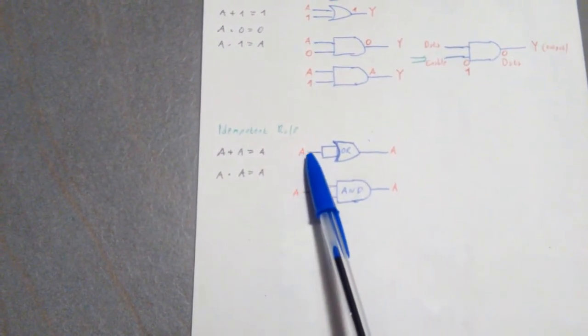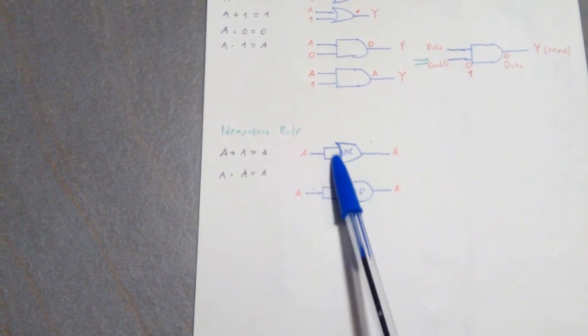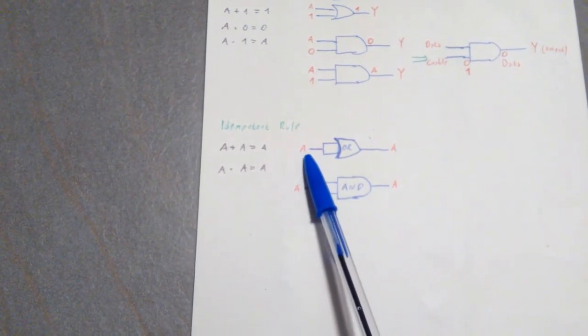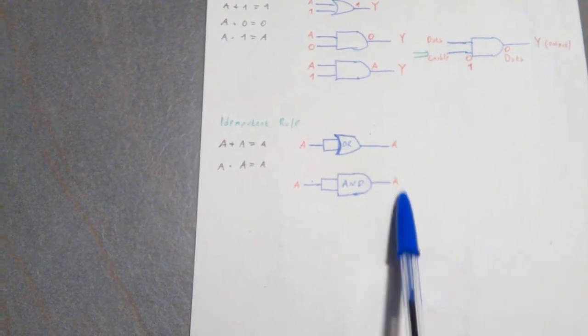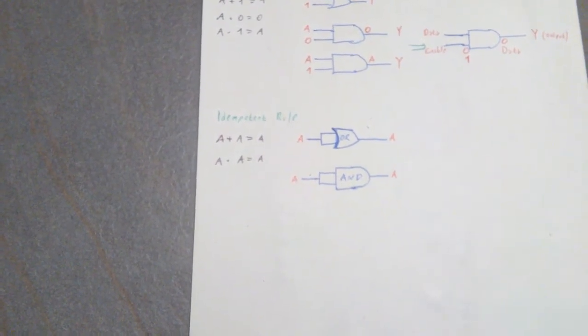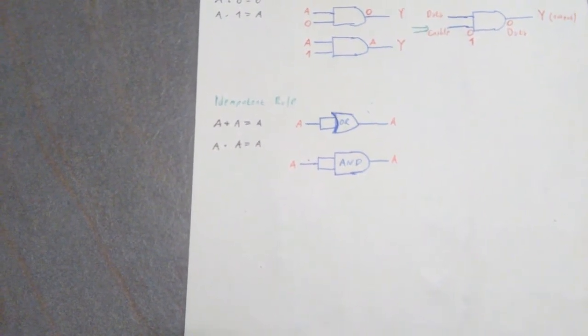It means that the input is just going to be the output, because if you have two inputs which are the same, it's exactly the same, it doesn't matter whether you apply an OR gate or an AND gate, the output is always going to be the same as the input. So yeah, in a nutshell, this is the idempotent rule.